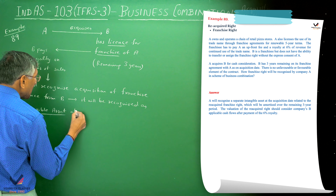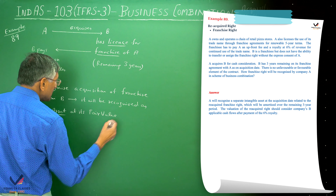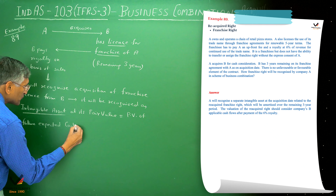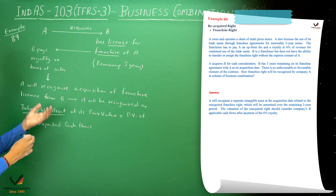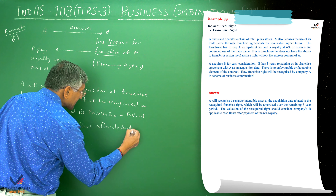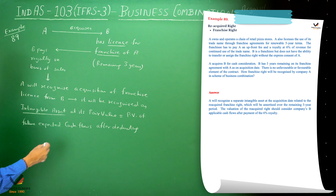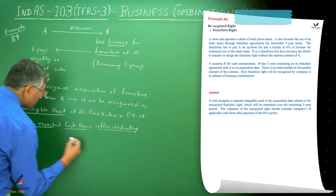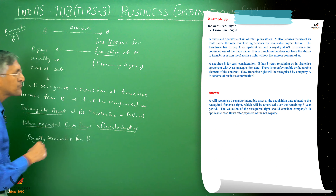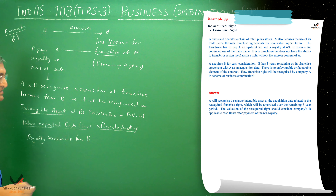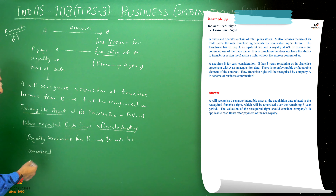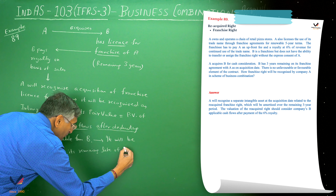How do we determine the fair value? The fair value is the present value of the future expected cash flows. These cash flows will be net of royalty — that is, after deducting royalty, which is receivable from the franchisee B. So this is shown as an intangible asset and will be amortized over its remaining life, which is three years.